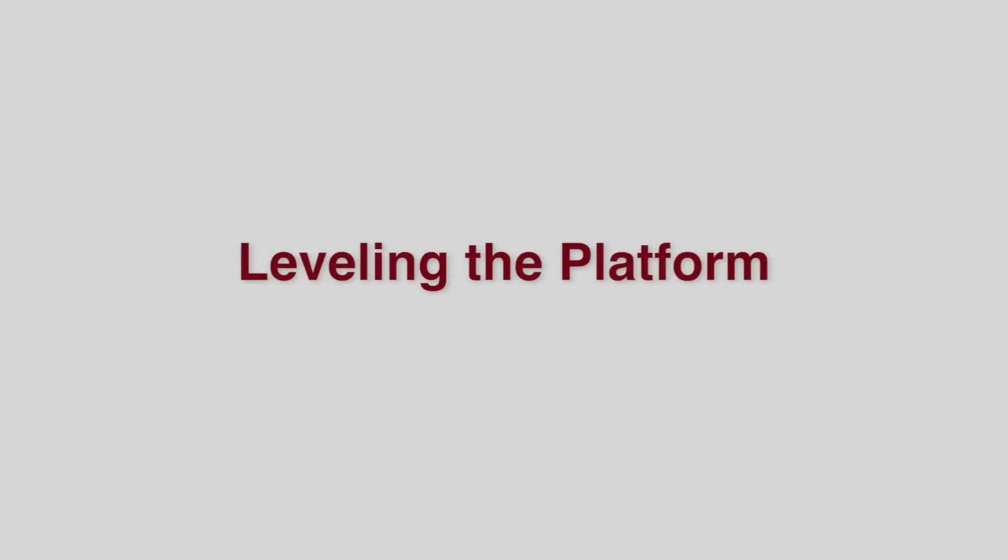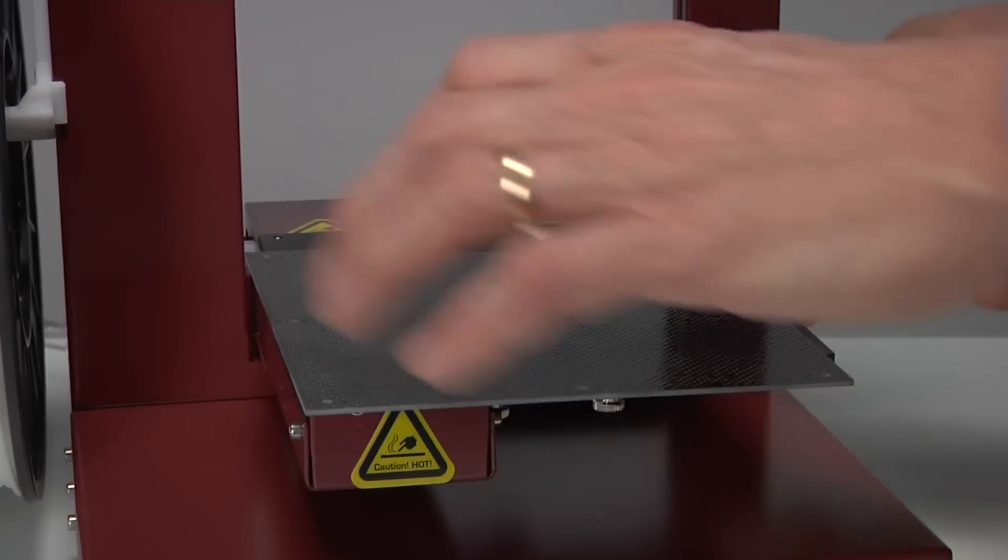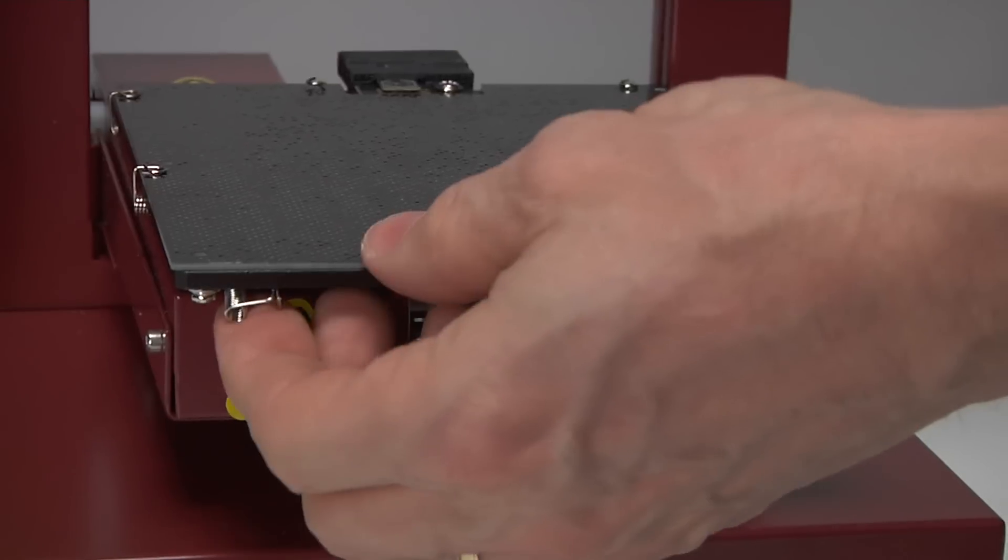Leveling the platform. To print correctly, the platform must be level. Here's how to do it. Remove any extruder filament from the bottom of the nozzle. Place the printing surface, such as the perf board, on the printer platform.